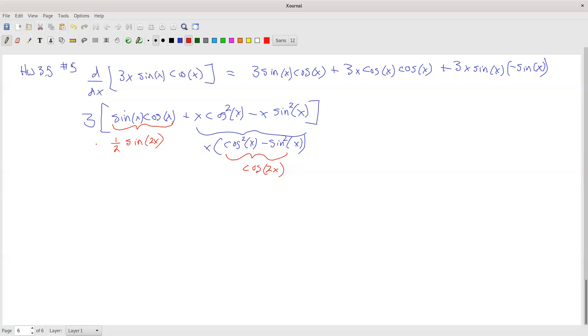And then the question is, is that any better than what I started with? So one version of the answer for sure is this. It doesn't make our life much better by applying the double angle formula. So my claim is that this right here should be equal to 3 times one half sine of 2x plus x cosine of 2x.